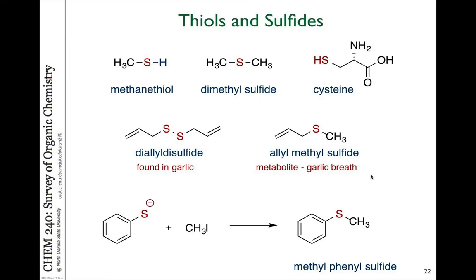You can see here several different examples of sulfur-containing compounds. Sulfur is one row below oxygen on the periodic table, so it has a lot of similarities. We refer to a sulfur-hydrogen compound as a thiol, similar to an alcohol. So if it's a one-carbon group, we would refer to this as methane thiol. If it's a sulfur analog of an ether molecule, where we have carbons on either side, we name it very similar to how we name ethers — instead of using ether, we use the word sulfide. So in this case, dimethyl sulfide would be the name of that molecule.